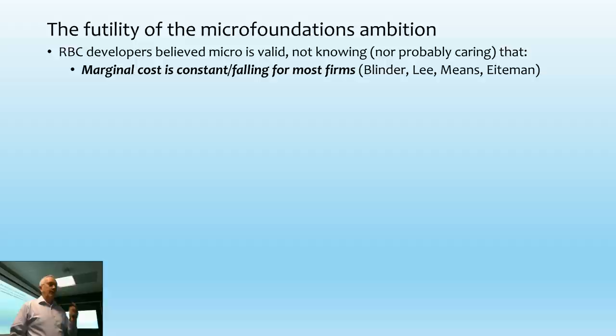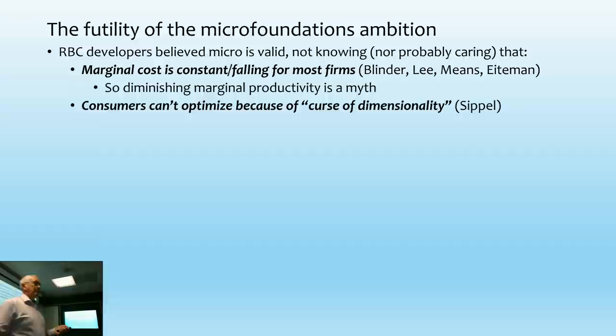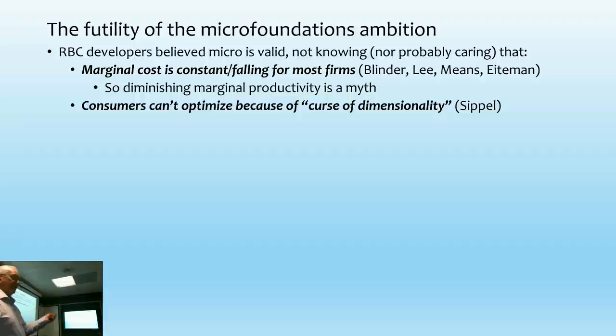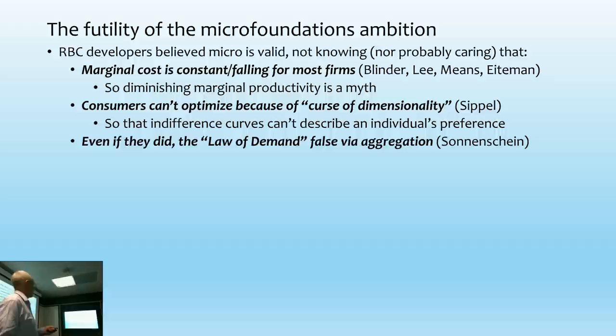Now they don't actually know all the things I've covered in this course so far. They don't know that marginal cost is constantly flat for the vast majority of firms — that contradicts their theory of diminishing marginal productivity and means you can't even get to first base about marginal cost setting price. They don't realise that consumers can't optimize because they haven't considered the curse of dimensionality, which turned up so well in Sippel's experiment with students to see whether they could actually maximize utility according to the laws of revealed preference for a mere eight commodities.